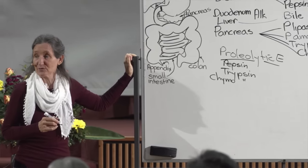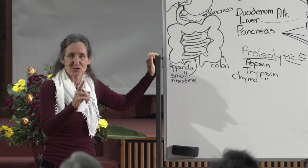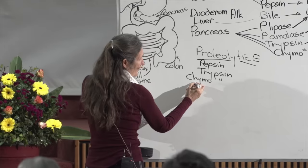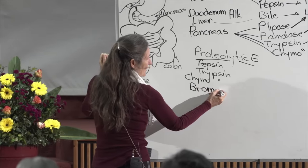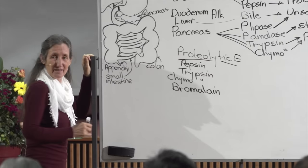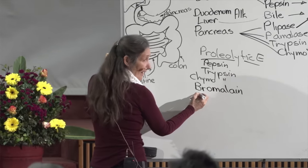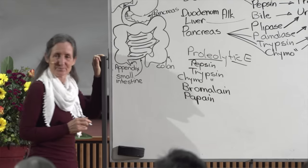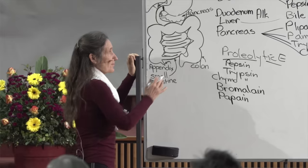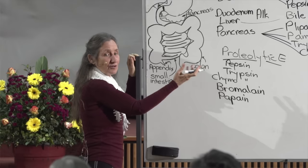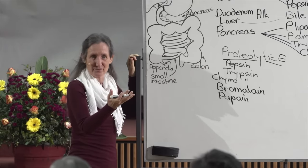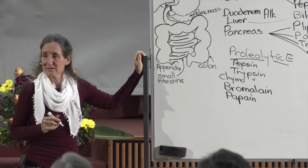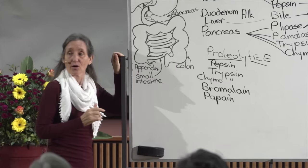Psalm 104 verse 14 says God gave herbs for the service of man. There are foods that are proteolytic enzymes. From the core of the pineapple, bromelain can be extracted — it's a proteolytic enzyme. From the papaya, papain can be extracted — also a proteolytic enzyme. So if someone has pancreatic problems, they should take digestive enzyme supplements containing bromelain and papain, which help in the final breakdown of protein.